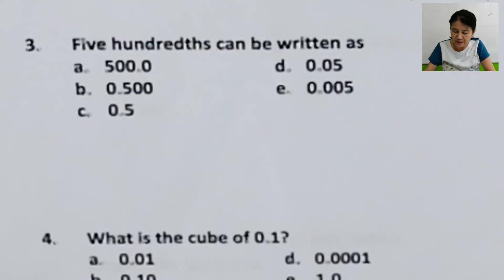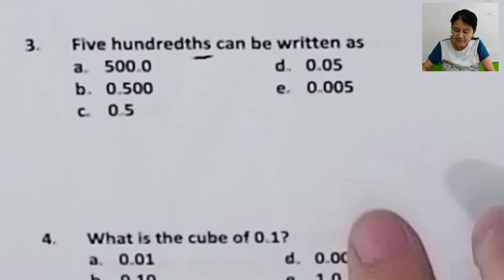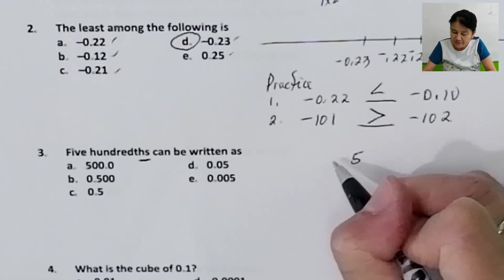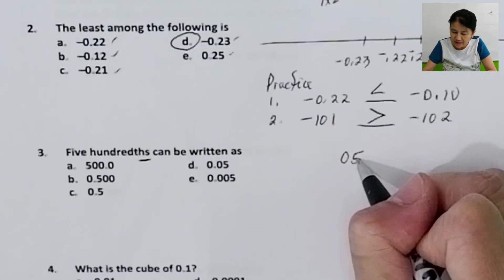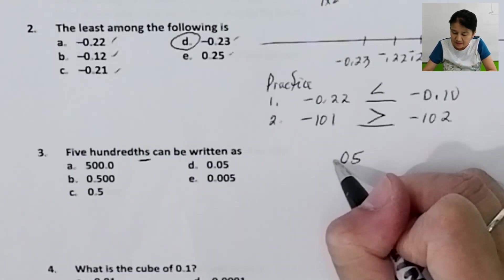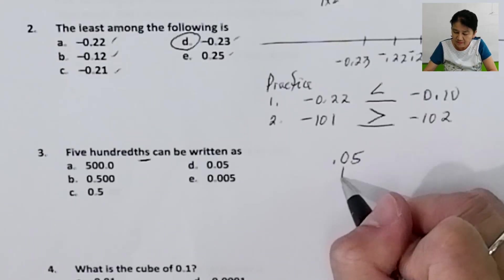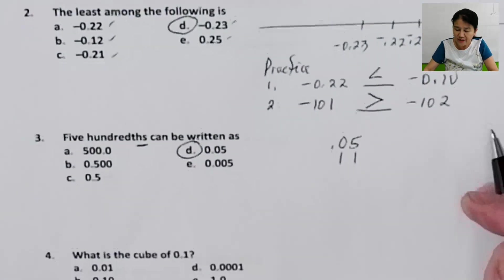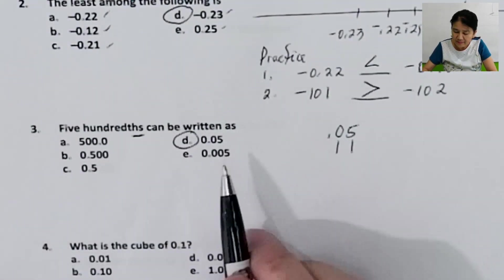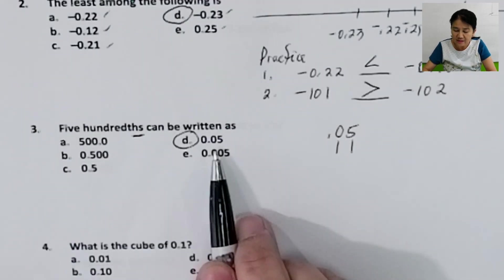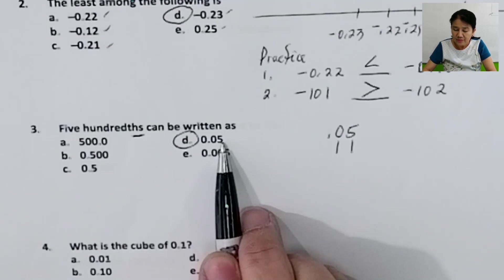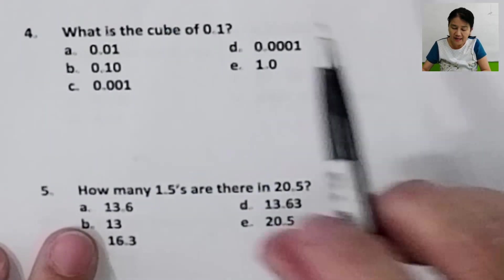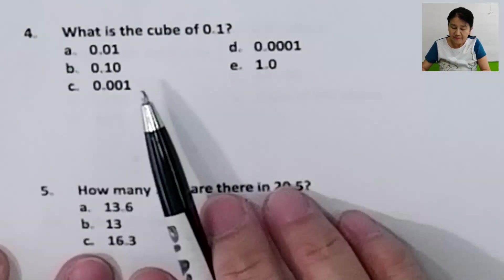Problem number 3. '5 hundredths' can be written as... The place values are: tenths, hundredths. So the answer is letter D, point zero five (0.05). Remember: tenths, hundredths, thousandths. So you name or read 0.05 as five hundredths.